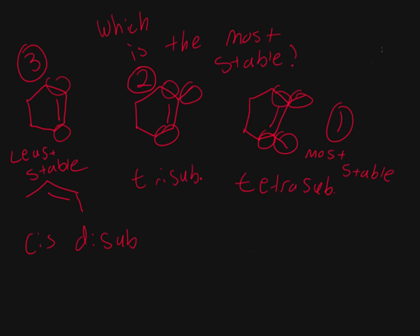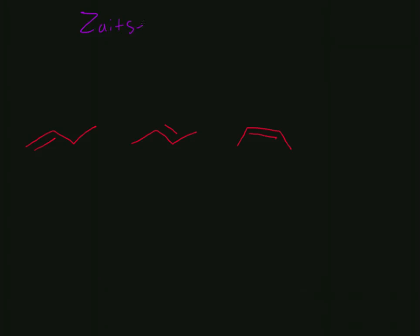Let's do one more example. We have three different alkenes that all have four carbons. Which one is the most stable using Zaitsev's rule — which means we are looking for the most substituted. This one right here has two hydrogens branching off of this carbon and only one substituent, which is this ethyl group. So this would be monosubstituted, because we only have one substituent branching off and this other carbon only has two hydrogens.